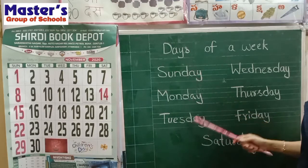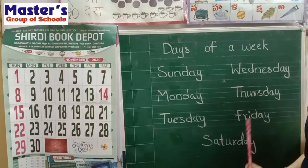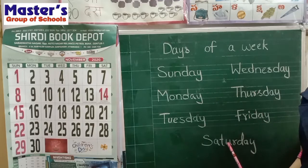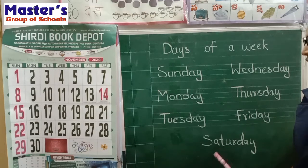See, how many days? 1, 2, 3, 4, 5, 6, 7. There are 7 days in a week.